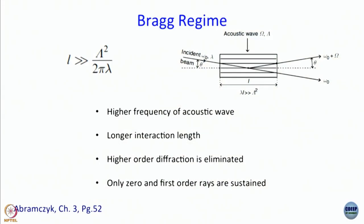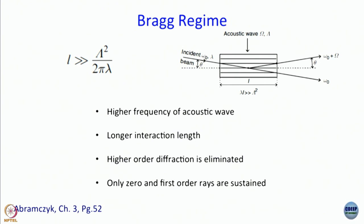In cavity dumping, once again we use an acoustic optic modulator. We have talked about mode locking using an acoustic optic modulator. At that time we said you have to use the AOM in the Raman-Nath regime, where L is much much less than lambda-squared over 2-pi-lambda, where capital lambda is the wavelength of the sound wave and small lambda is the wavelength of light. In cavity dumping we have to operate the AOM in the so-called Bragg regime, where L, the thickness of the medium, is much much greater than capital-lambda-squared over 2-pi-lambda.